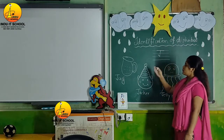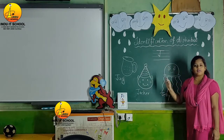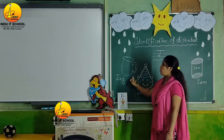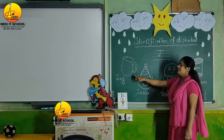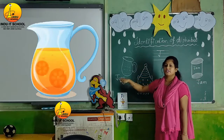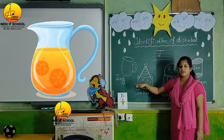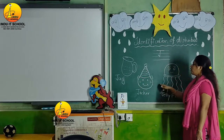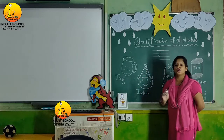There are so many objects related to alphabet J. Our first object is J for jug. J for jug — we keep water in it.